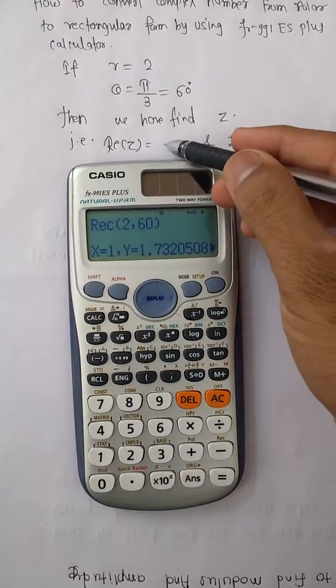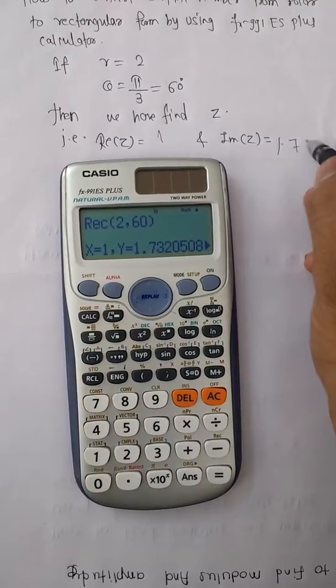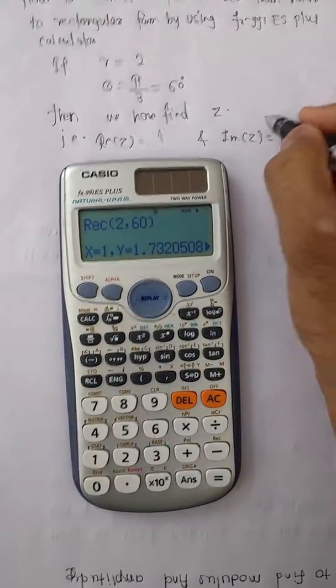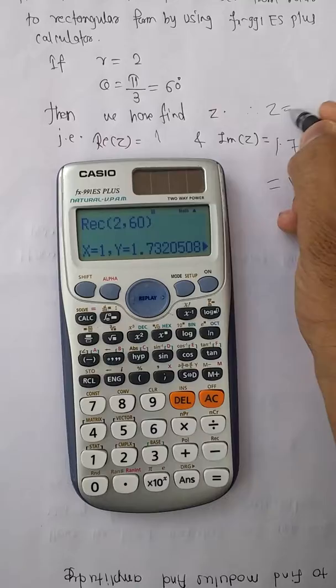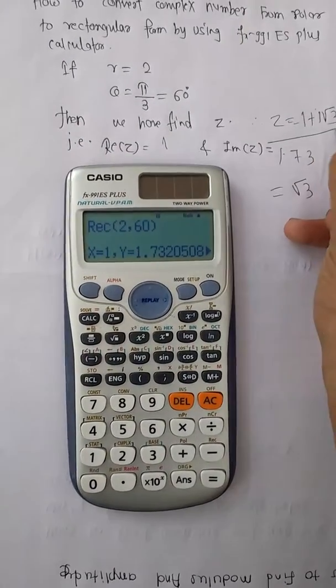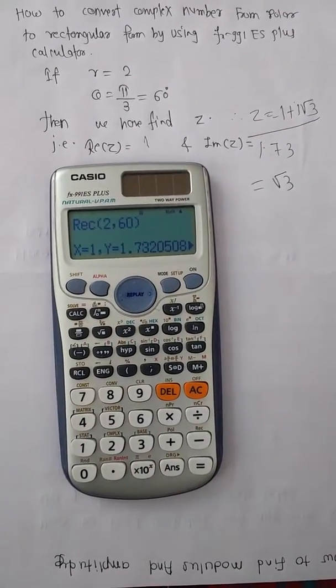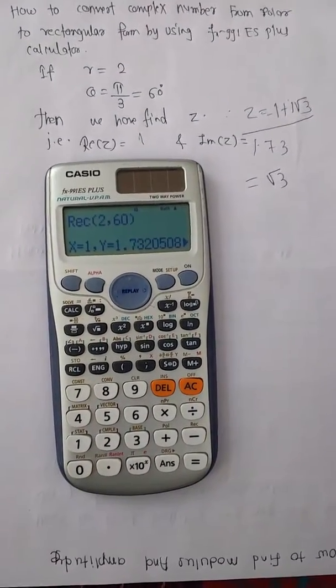Then we get real part, that is X is equal to 1 and Y is equal to 1.73, that is equal to root 3. Therefore, our Z is equal to 1 plus i root 3. This is the rectangular form. In this way we can convert a complex number from polar to rectangular form.